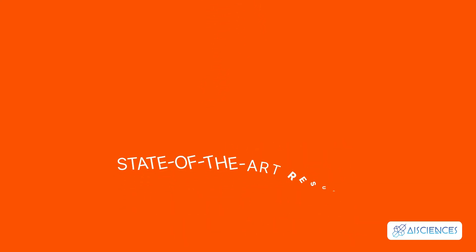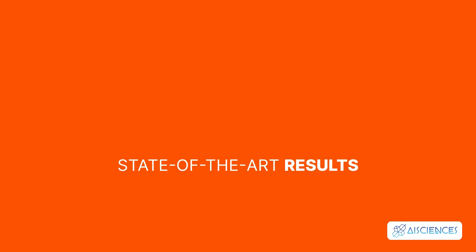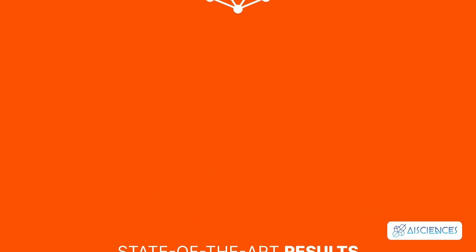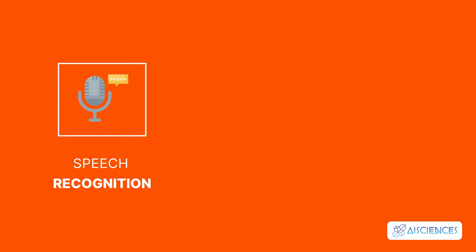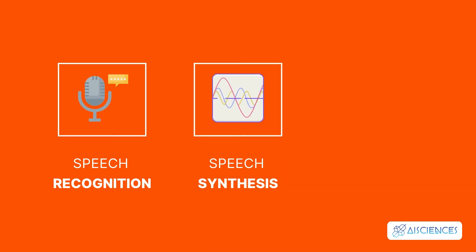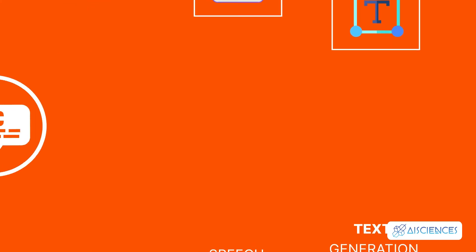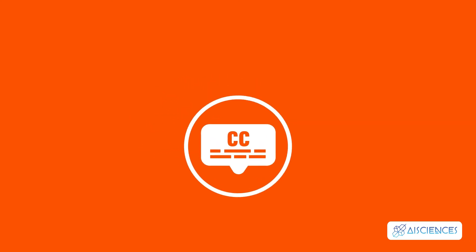Almost all state-of-the-art results based on recurrent neural networks are achieved with LSTMs. LSTMs can be found in speech recognition, speech synthesis, and text generation. You can even use them to generate captions for videos.